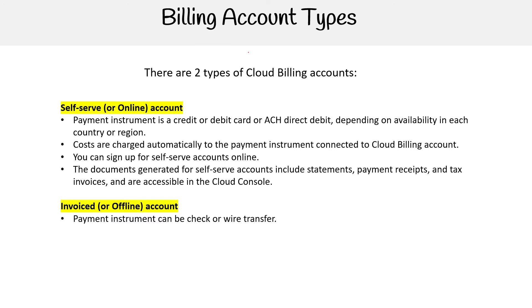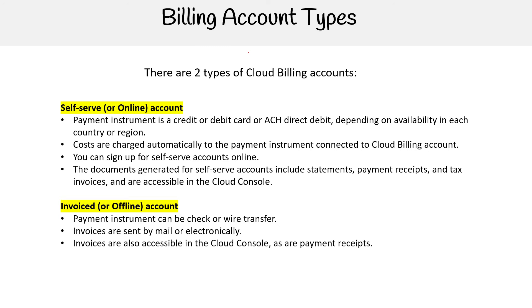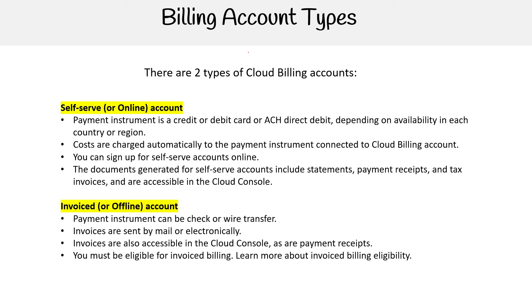Then you have invoiced or offline accounts. The payment instrument can be a check or wire transfer. Invoices are sent by mail or electronically, and invoices are also accessible in the Cloud console, as are payment receipts. You must be eligible for invoice billing — you can learn more about it in the documentation. It's interesting; I don't remember seeing whether AWS or Azure had that, but it's cool that you can do that kind of offline method.